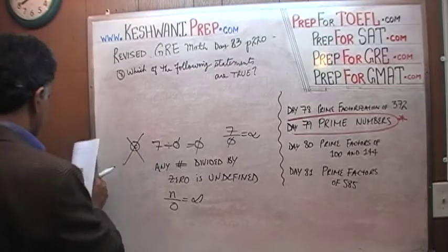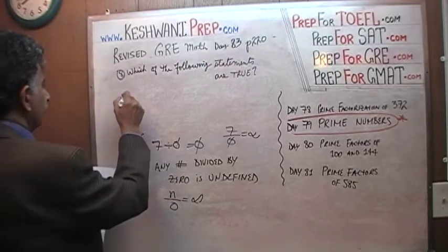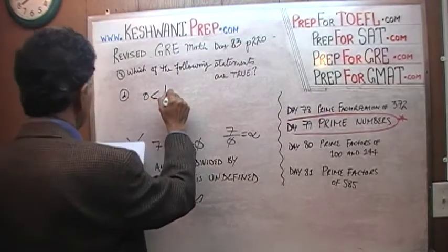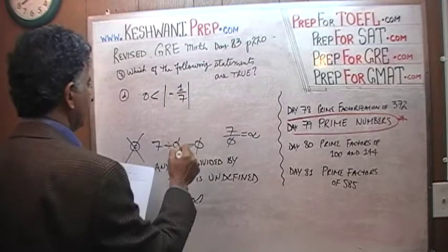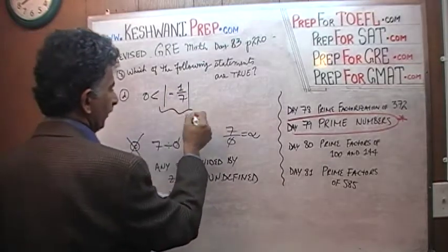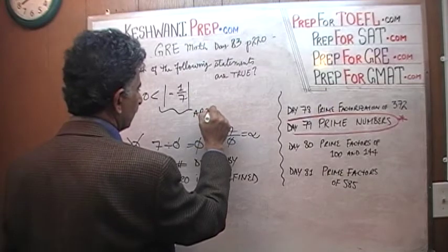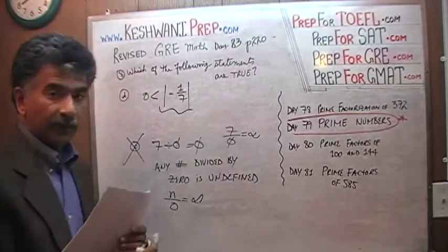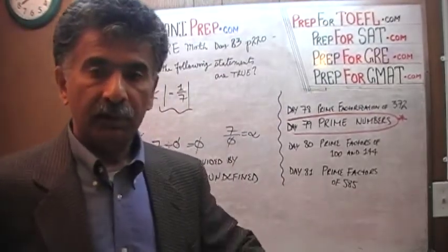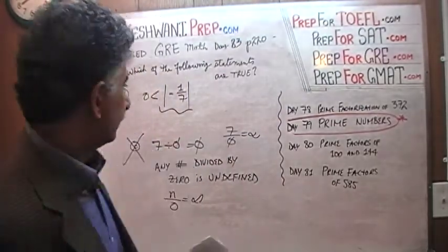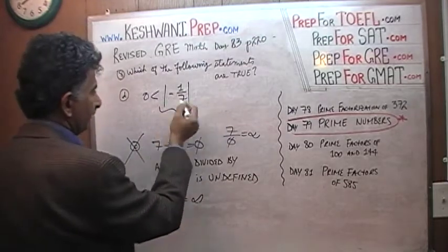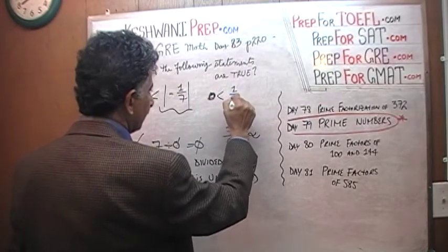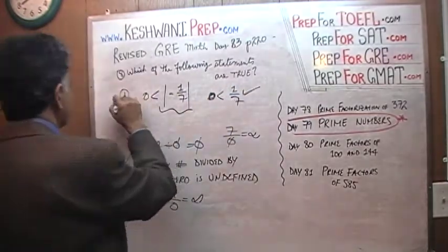Statement D says 0 is less than the absolute value of negative 1 over 7. Absolute value simply means that you ignore the negative sign, so it becomes positive. What this actually says is that 0 is less than 1/7, which of course is true. D is true.